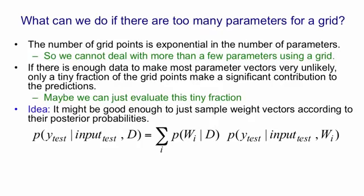Now instead of adding up all the terms in that sum, we could just sample terms from that sum. What we do is we sample the weight vectors in proportion to that probability. So either we sample them or we don't, so they'll get a weight of 1 or 0.